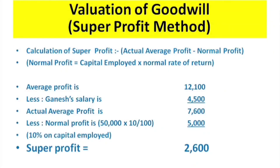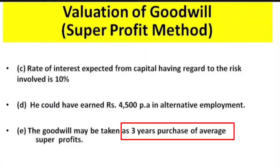Super profit = actual average profit minus normal profit = ₹7,600 − ₹5,000 = ₹2,600. Goodwill = super profit × number of years of purchase = ₹2,600 × 3 = ₹7,800.